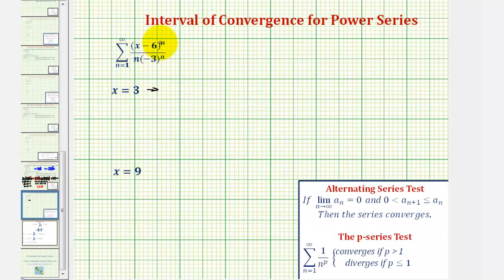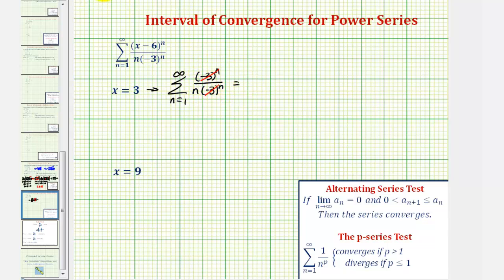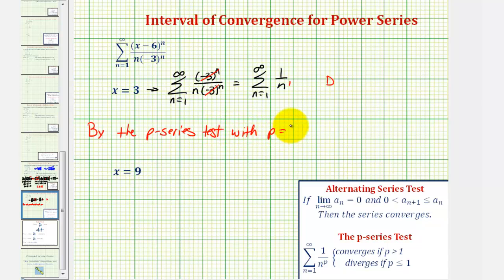Now we'll test the endpoints. When x equals positive three, we have three minus six, giving us negative three to the nth. So we have the summation from n equals one to infinity of negative three to the nth divided by n times negative three to the nth. This simplifies to the summation from n equals one to infinity of one divided by n. We recognize this as the harmonic series, which diverges — or by the p-series test with p equals one, the series diverges at x equals three.